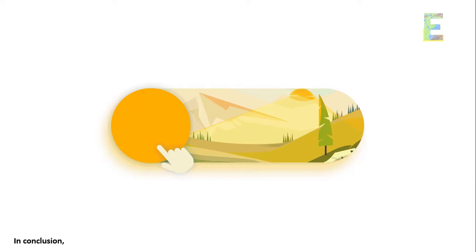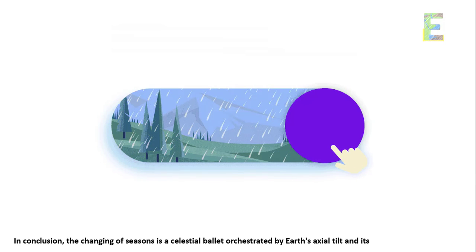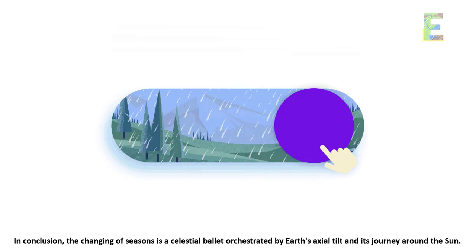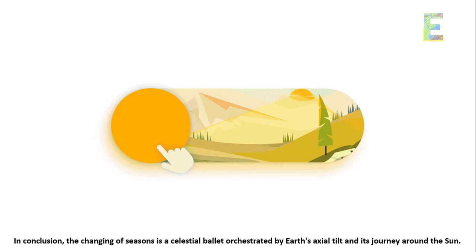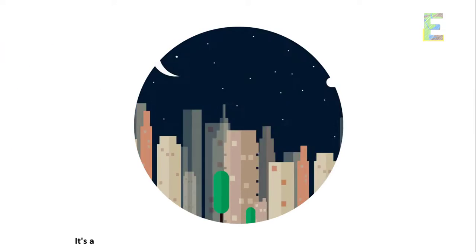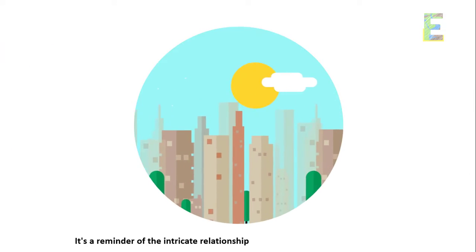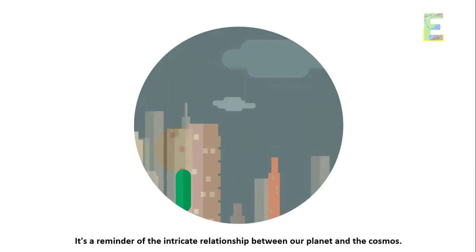In conclusion, the changing of seasons is a celestial ballet orchestrated by Earth's axial tilt and its journey around the sun. It's a reminder of the intricate relationship between our planet and the cosmos.